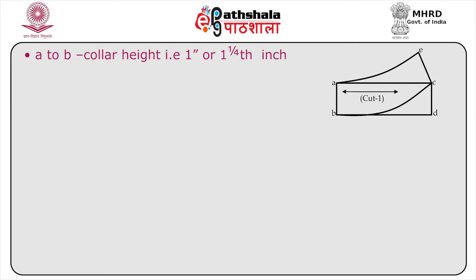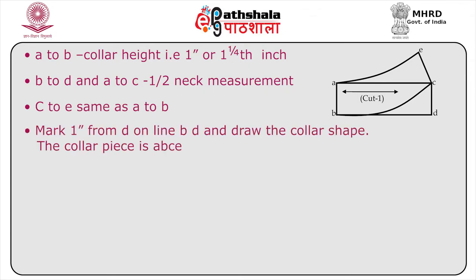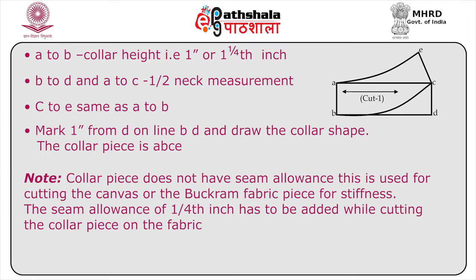For drafting the collar and interlining: A to B is collar height, that is 1 inch or 1.25 inches. B to D and A to C is half neck measurement. C to E is the same as A to B. Mark 1 inch from D on line BD and draw the collar shape — the collar piece is A–B–C–E. Please note that the collar piece does not have seam allowance; it is used for cutting the canvas or buckram fabric for stiffness. A seam allowance of one-fourth inch must be added when cutting the collar piece on fabric.